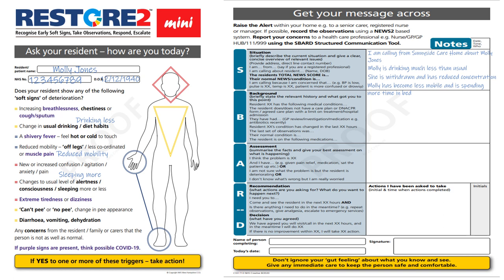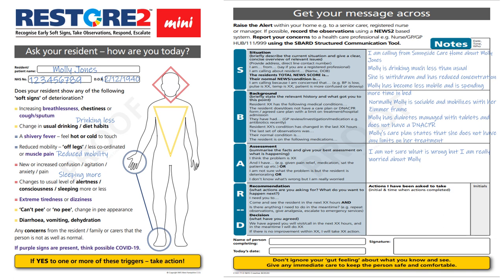For Background: 'Normally Molly is sociable and mobilises with her Zimmer frame. Molly has diabetes managed with tablets and does not have a DNA CPR. Molly's care plan states she does not have any limits on her treatment.' For Assessment: 'I'm not sure what's wrong but I'm really worried about Molly.' For Recommendation: 'Please can you advise me what to do next?' It's fine not to be able to diagnose, but you can articulate that you're worried. The next step is to record the decision — in this case, a GP will visit Molly by 7pm today.